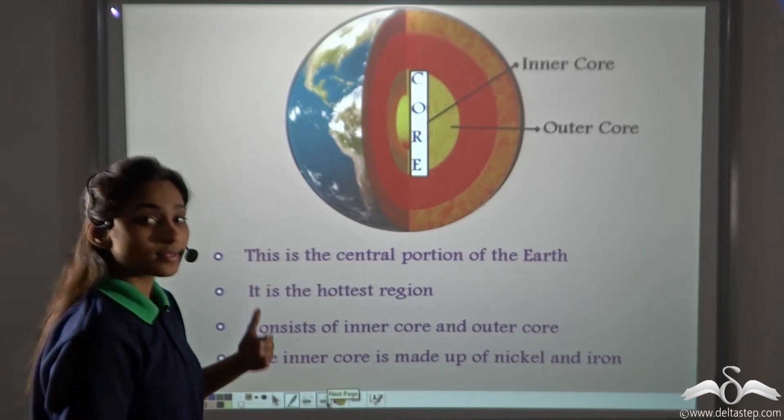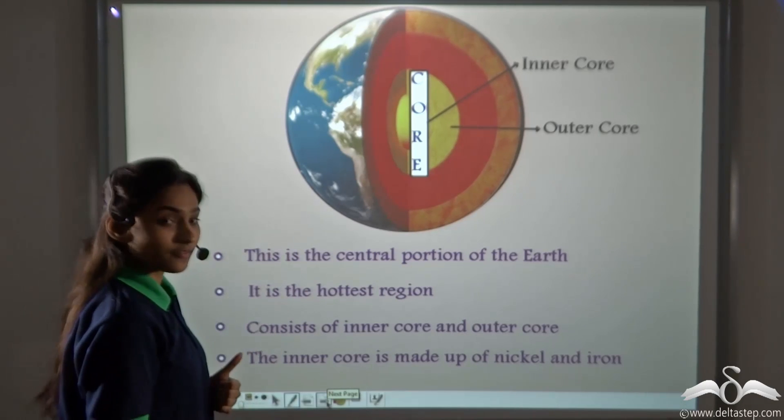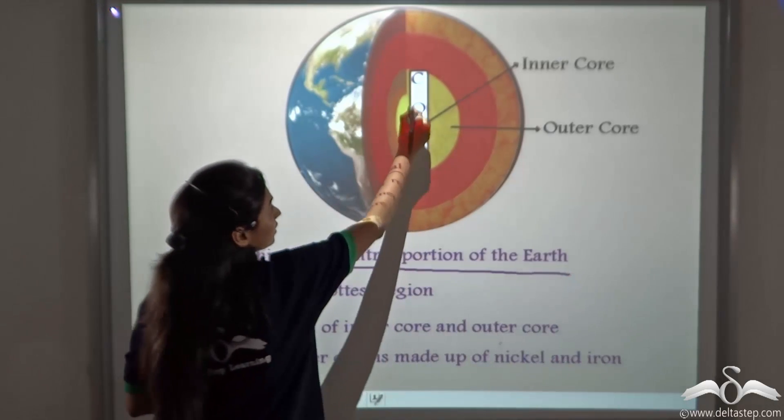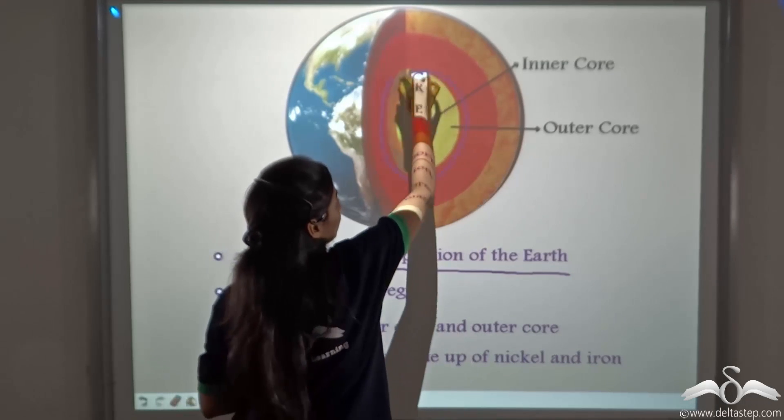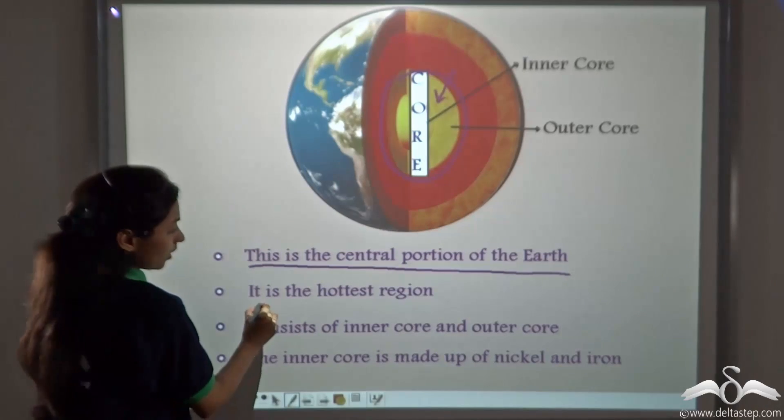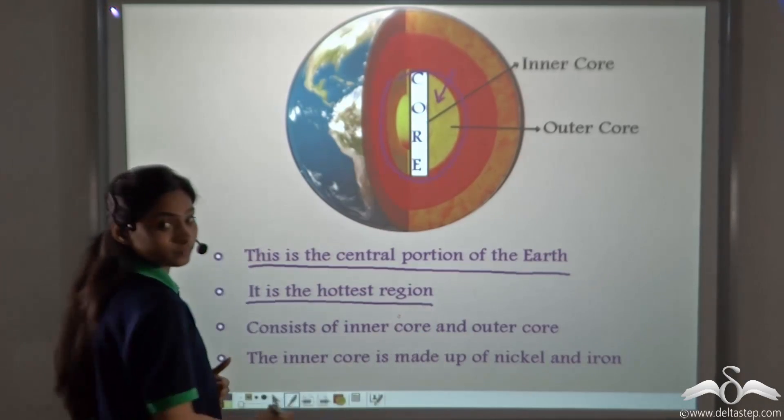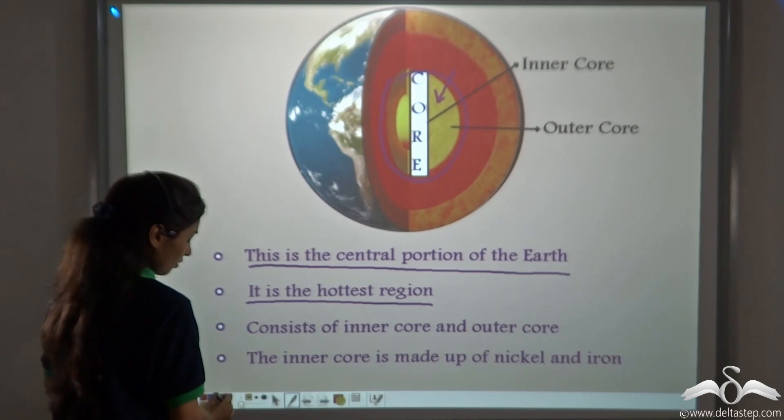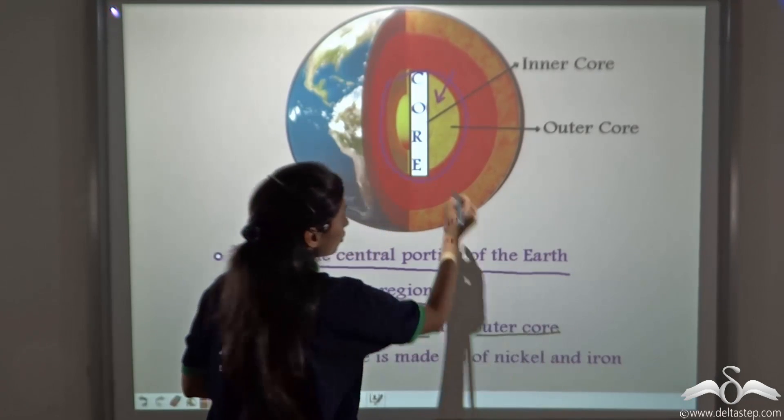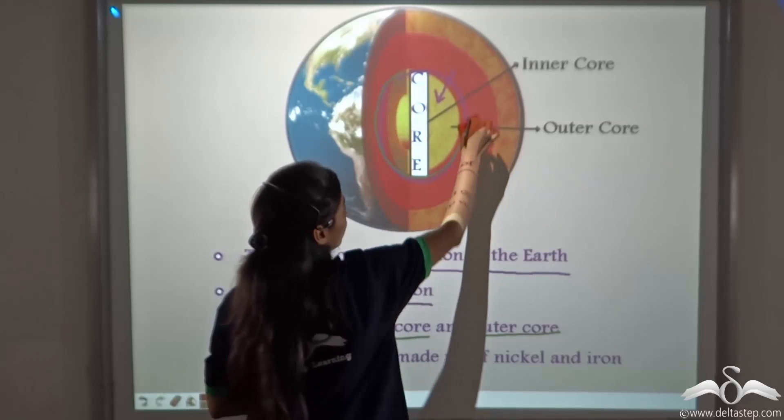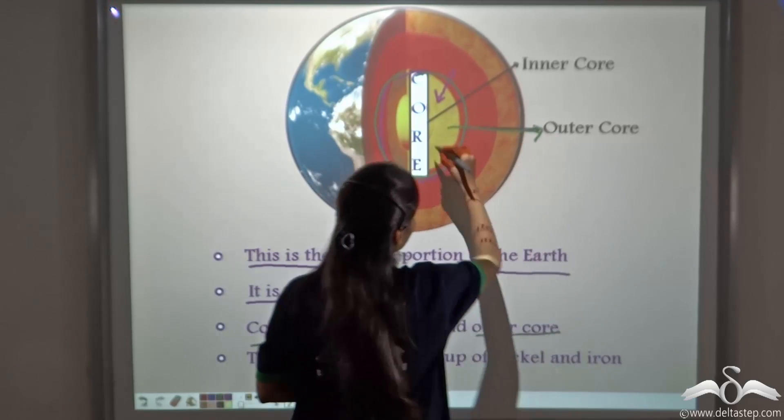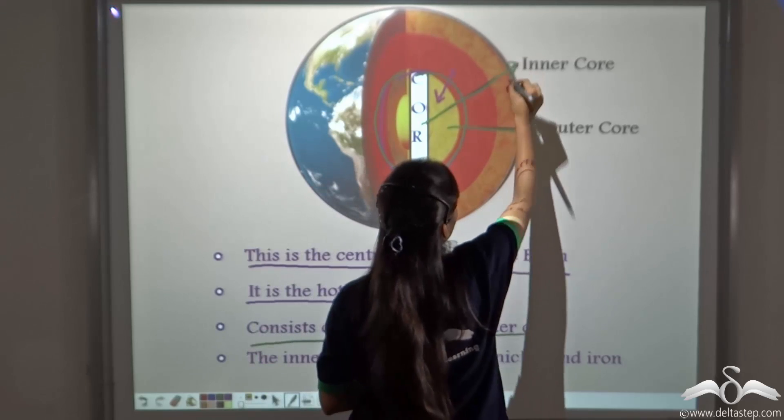Now what comes after mantle? Core comes after mantle. This is the central portion of the earth. It comes just below the mantle. It is the hottest region. It consists of inner core and outer core. You can see that the core is divided into two parts. The outer part is the outer core and the inner part is known as the inner core.